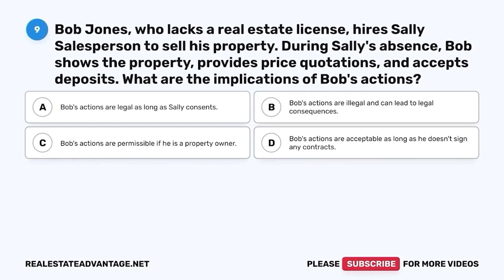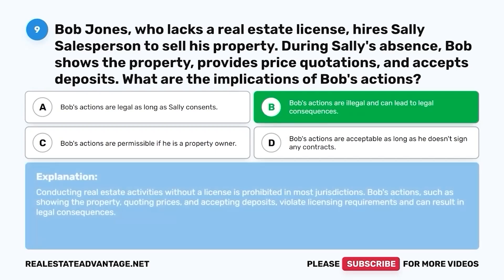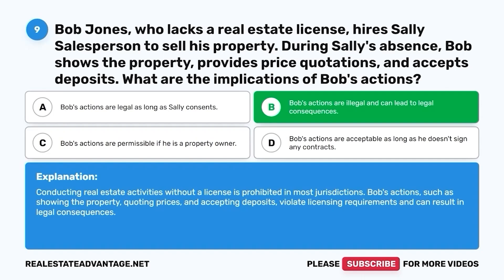Question 9. Bob Jones, who lacks a real estate license, hires Sally's salesperson to sell his property. During Sally's absence, Bob shows the property, provides price quotations, and accepts deposits. What are the implications of Bob's actions? A. Bob's actions are legal as long as Sally consents. B. Bob's actions are illegal and can lead to legal consequences. C. Bob's actions are permissible if he is a property owner. D. Bob's actions are acceptable as long as he doesn't sign any contracts. The correct answer is B. Conducting real estate activities without a license is prohibited in most jurisdictions. Bob's actions violate licensing requirements and can result in legal consequences.